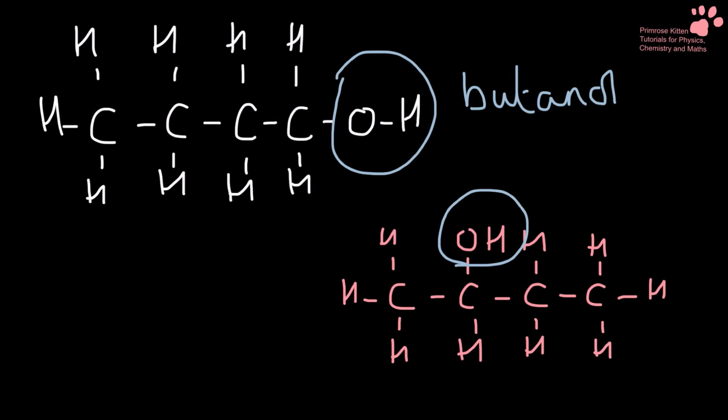Now we need to number them. And remember we do our numbering, giving the functional group the lowest priority possible. So we need to go one, two, three, four. So then we break butanol apart and we say butan-1 to show you where the alcohol group is. So that is butan-1-ol.